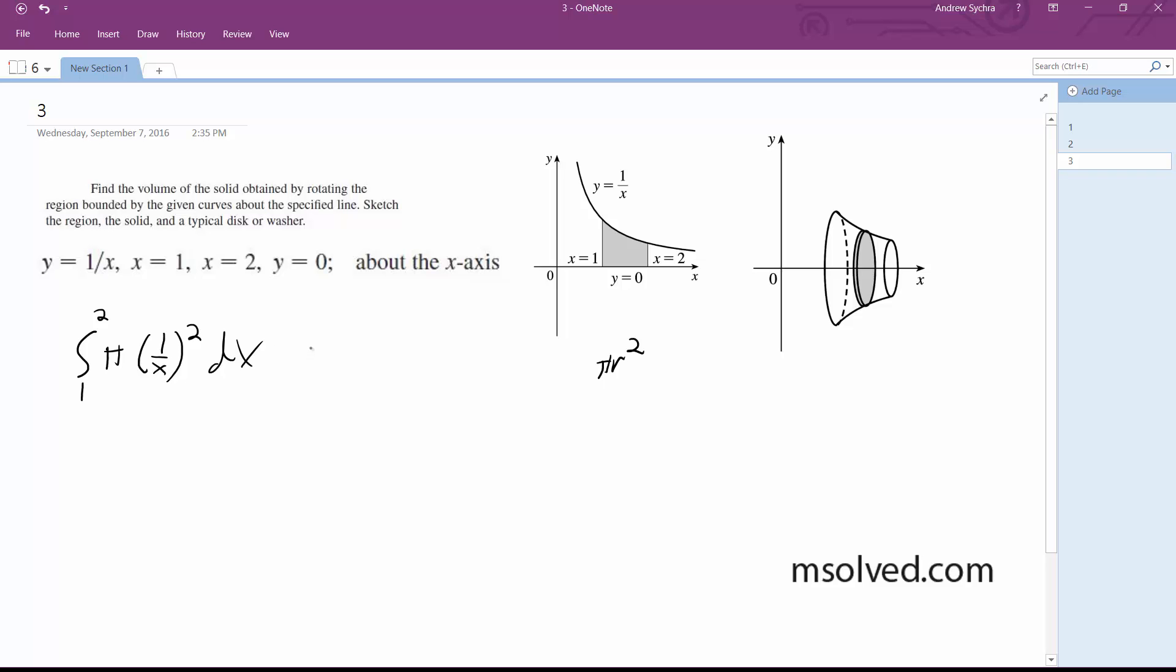So, integrating this, we're going to end up with pi times negative 1 over x, because it's the same thing as x raised to the negative 2, and then it becomes negative x to the negative 1, from 1 to 2.